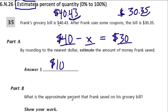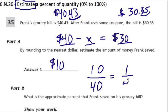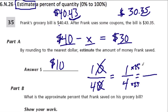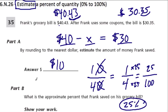Now we want to know the approximate percent Frank saved. He would have paid $40 originally, but he saved $10 out of that $40. That's the same as 10/40, which simplifies to 1/4. One fourth equals 25 out of 100, which is 25 percent.